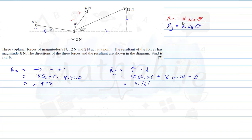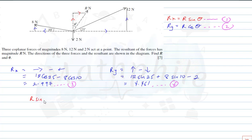Remember we got the resultant in x to be R sine theta and the resultant in y to be R cos theta. So we can substitute: R sine theta equals 2.997, and R cos theta equals 4.461. The task now is to find R and theta.